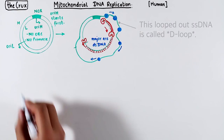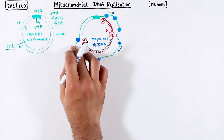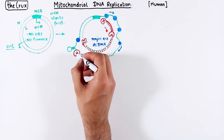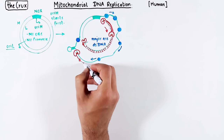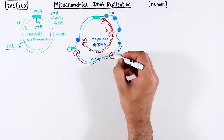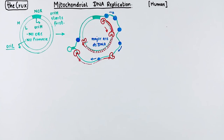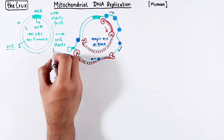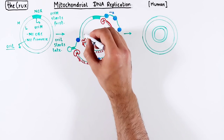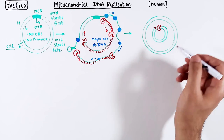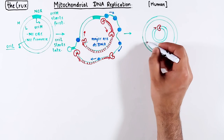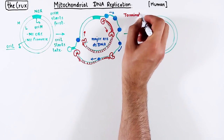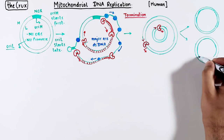As OriL gets unwound by the moving Twinkle, the single-stranded OriL turns into a stem-loop structure. It then recruits a DNA polymerase, which moves in the direction of the major arc and copies DNA. So in the second phase, OriL also starts DNA replication. Both DNA polymerases continue on their respective strands and eventually circle back to their starting positions, since this is circular DNA, leading to replication termination and giving two identical copies.